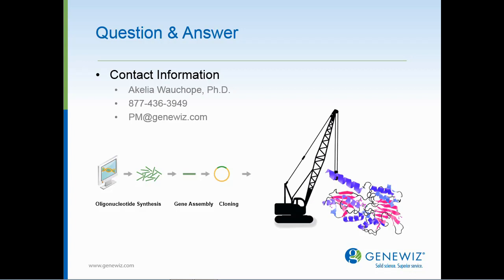The next question is about variant libraries and codons: if we are trying to create a library of variants of a protein where we are trying to change all the codon possibilities for 100 amino acids, can you guarantee synthesis of such a library? Great question. Here at GeneWiz, we do have a number of techniques at our availability, and we also accept projects such as the one described on a regular basis. In order to assist you, we would require that you provide us with a copy of the starting reference sequence, as well as additional details, and we can work with you to create such a library to better suit your downstream application.